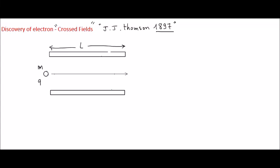Hi everybody! Today we will talk about crossed fields and discovery of electron by Joseph John Thomson in the 19th century. Nowadays we know what electrons are. They are particles, negatively charged, with a mass much much smaller than atoms.